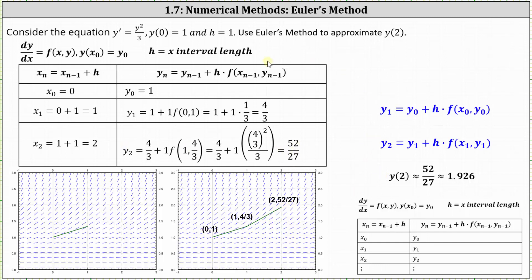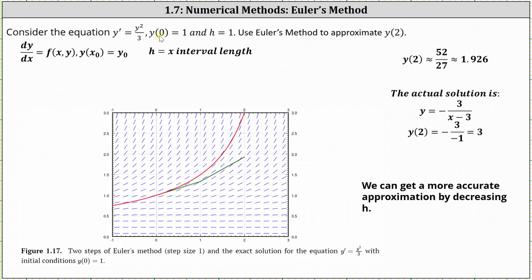Now in this particular case, we can actually solve the initial value problem and compare the exact value of y of two to our approximation. If we solve the given initial value problem, we get y equals negative three divided by the quantity x minus three, giving us y of two is equal to positive three. So the exact value of y of two is positive three, and using Euler's method where h is equal to one, our approximation is 1.926. Looking at the graph, the red graph is the particular solution, with the point two comma three on the right. The point on the green graph is two comma 1.926. The vertical distance between the two points would be considered the error.